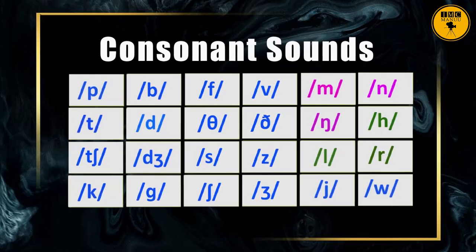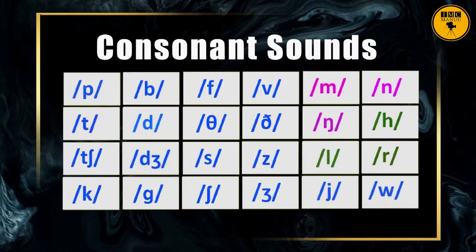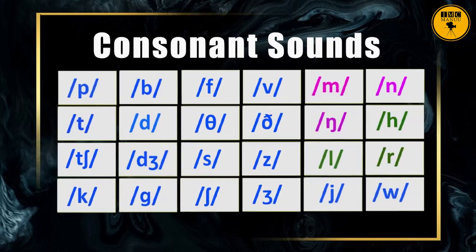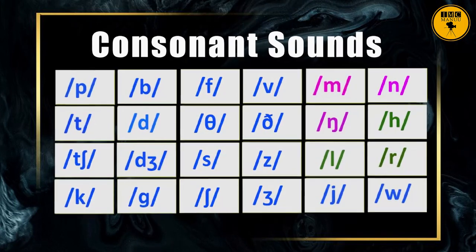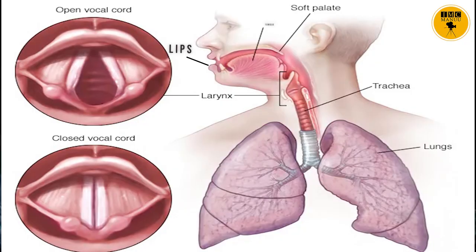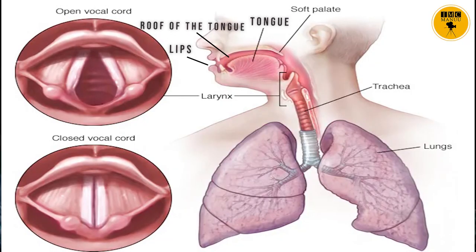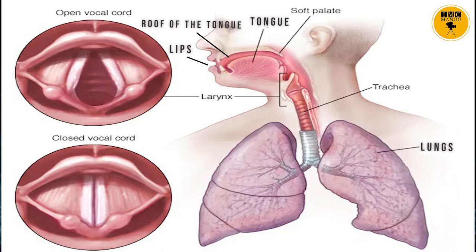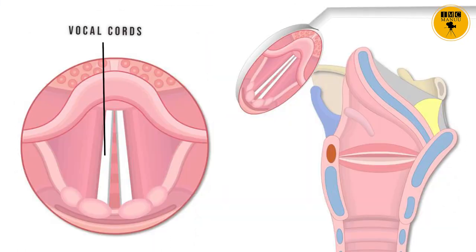It is not that English is a strange language with unique requirements. Most languages make use of these speech organs: the lips, the tongue, the roof of the mouth, the lungs, the vocal cords, the glottis. These are all speech organs that we use constantly when we utter sound. Without sound there is no speech, and without speech there can be no communication.